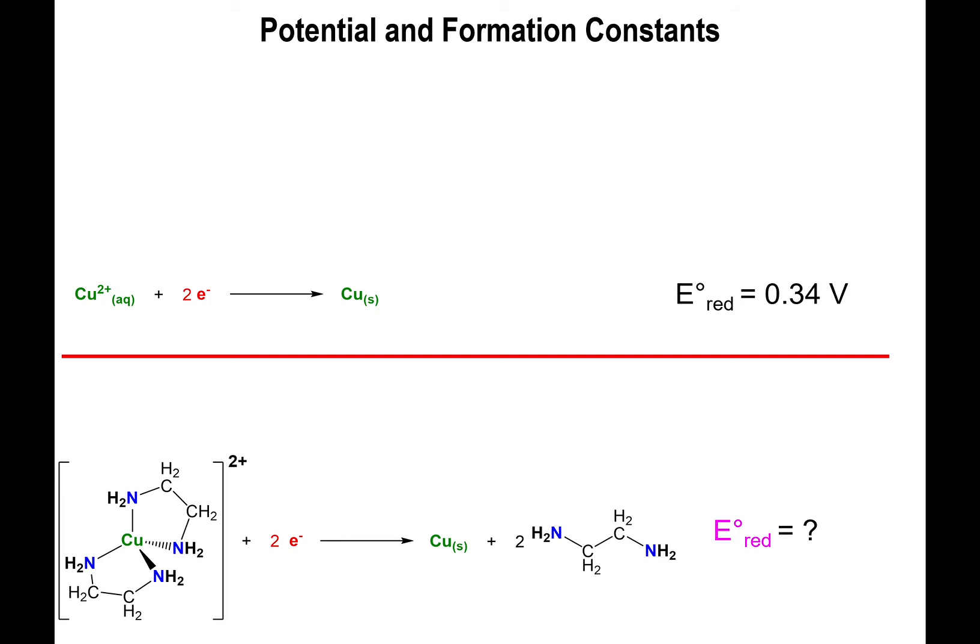And in addition to that, if you look at this, you can say, wait a minute, you have two ethylene diamines binding to copper forming this ethylene diamine copper 2+ complex. So that kind of gives you the idea that since you're forming a complex, you're probably dealing with the formation constants.